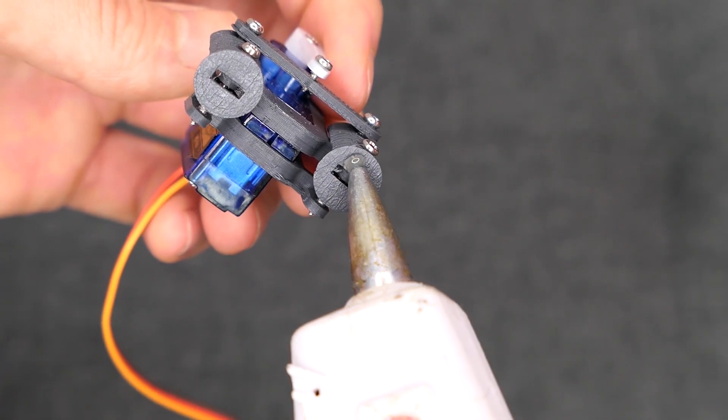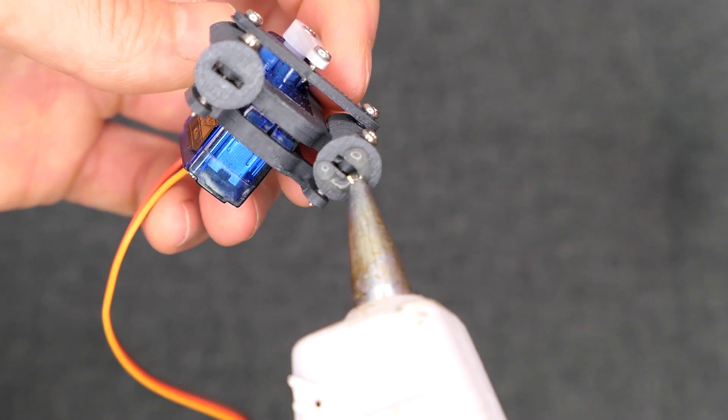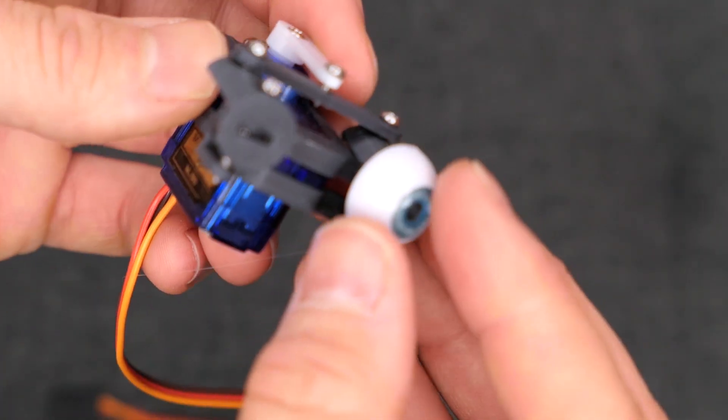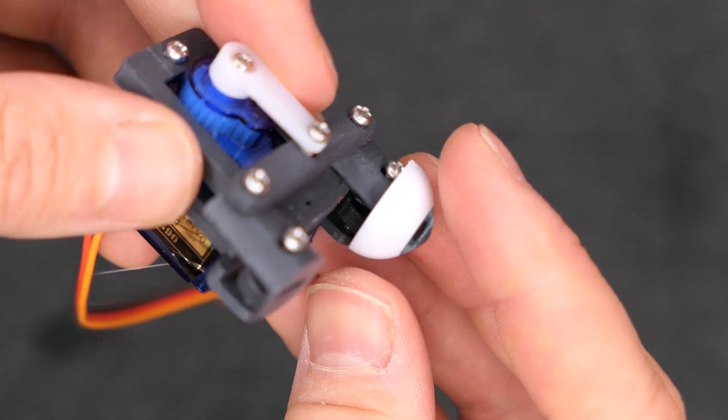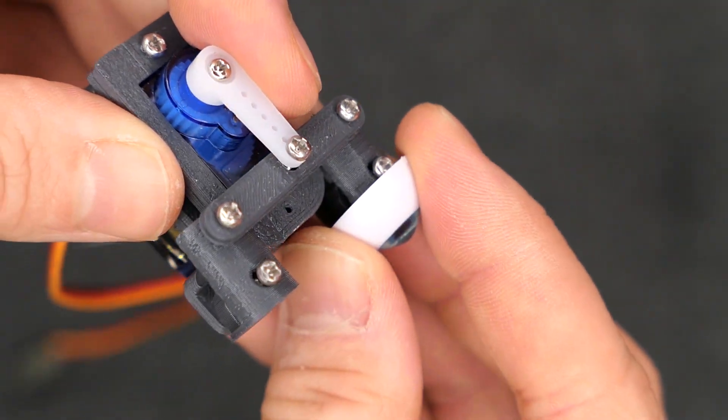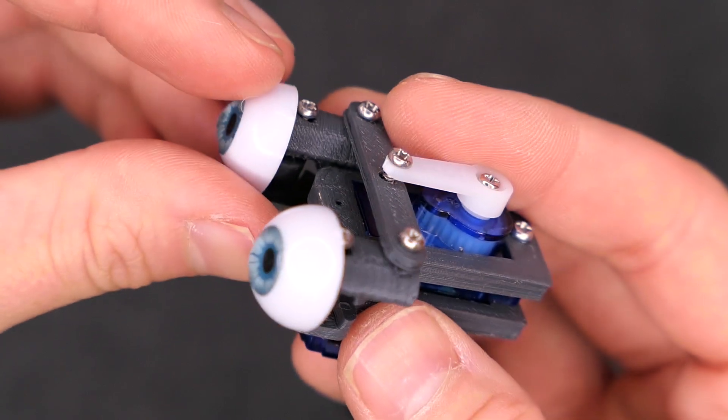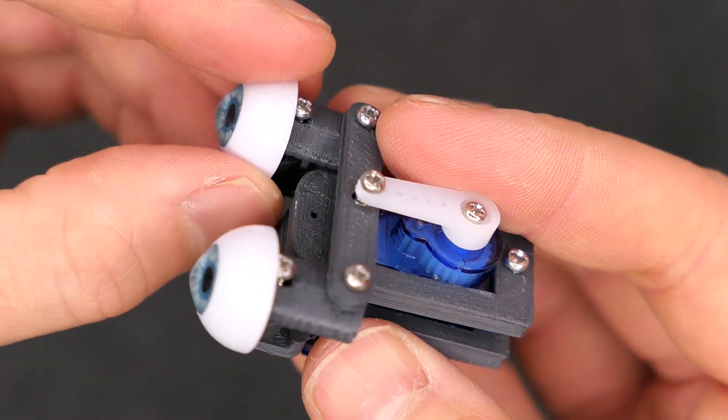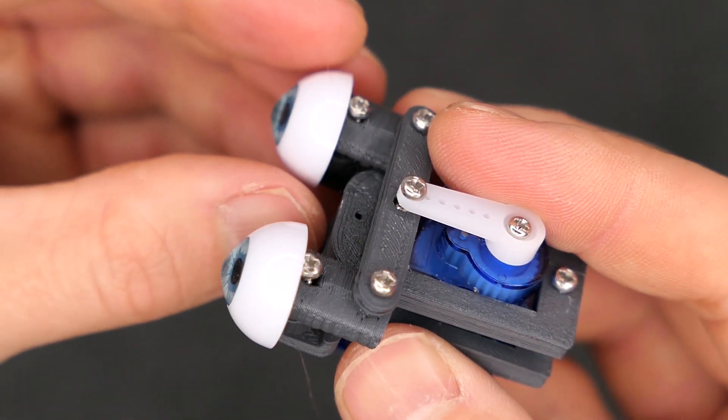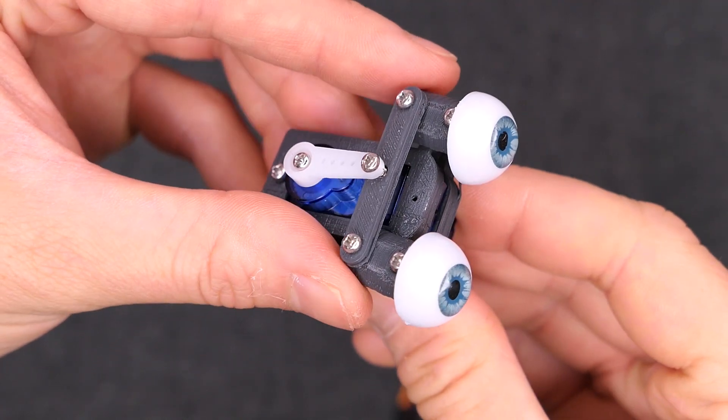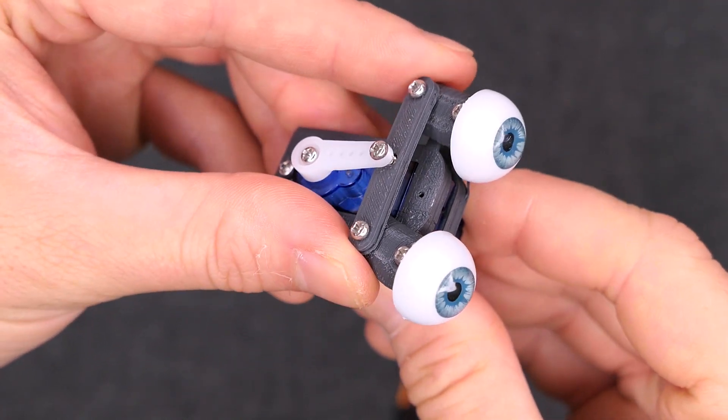Attach the eyes using hot glue. Make sure that the glue does not inhibit the mechanism from moving. Check that the mechanism functions properly with the eyes now glued in place.